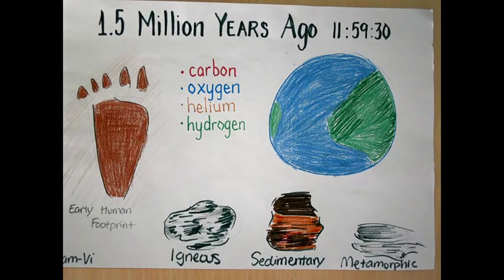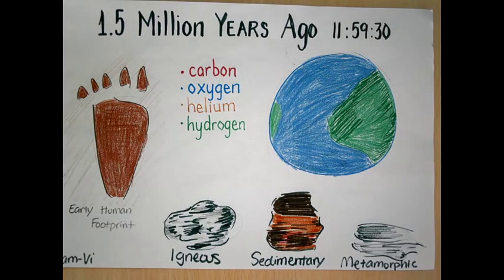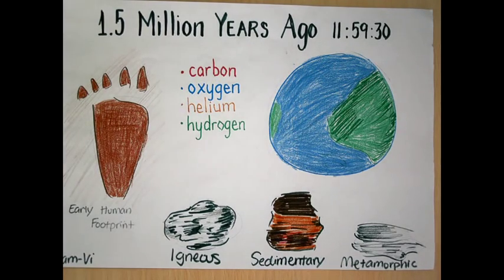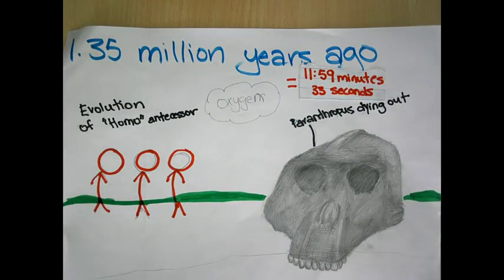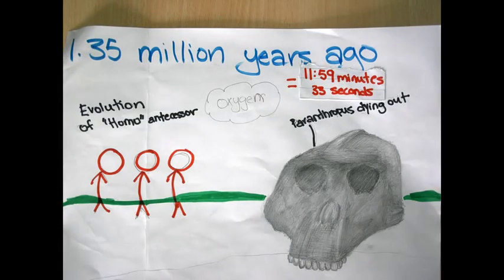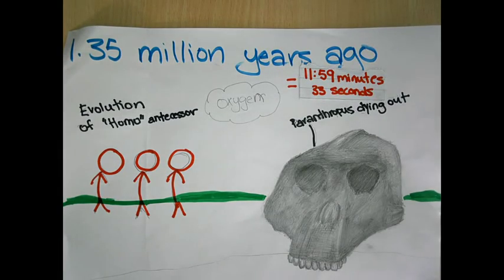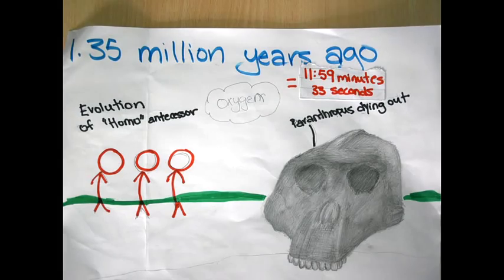At 11:59 and 30 seconds, water was like it is now, and the continents were kind of formed. Early humans lived 1.5 million years ago. Paleontologists found an early human footprint not so different from our footprints. Common rocks were igneous, sedimentary, and metamorphic. Around 1.35 million years ago, the Pithecanthropus was dying out and the Homo erectus were evolving.